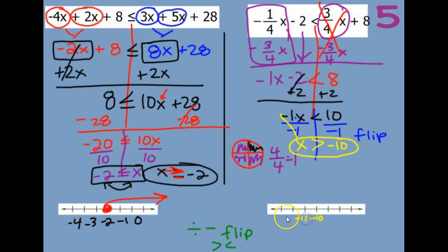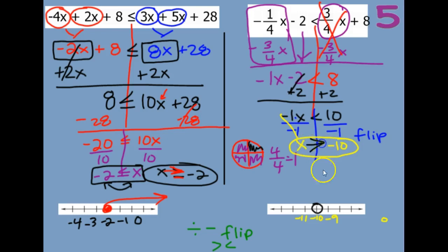Going to the left would be more negative; going to the right would be less negative, towards 0. This one does not have an equal to, so it's an open circle. And then greater than is to the right — greater than would be towards the positive numbers.